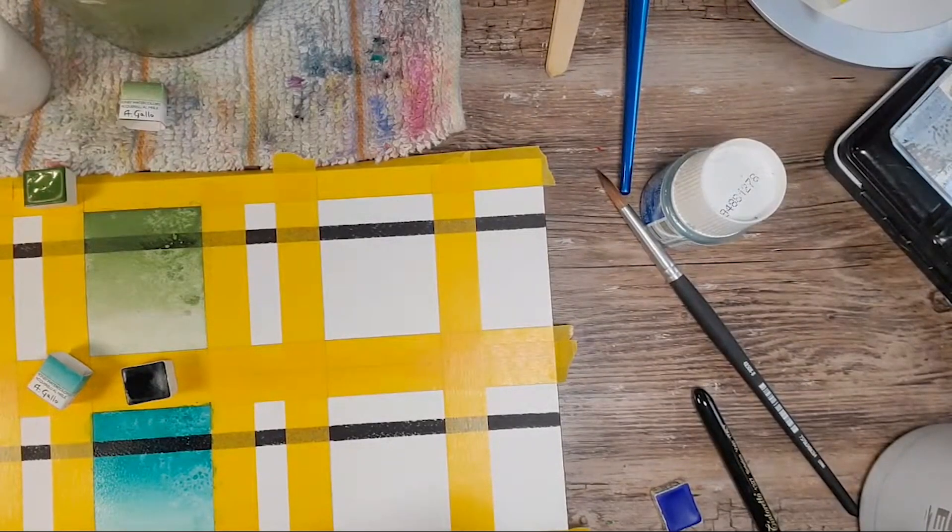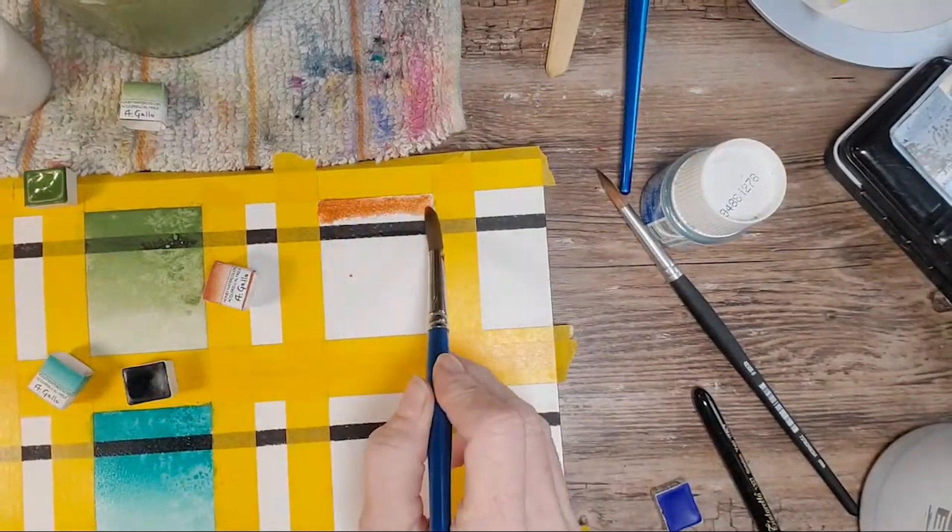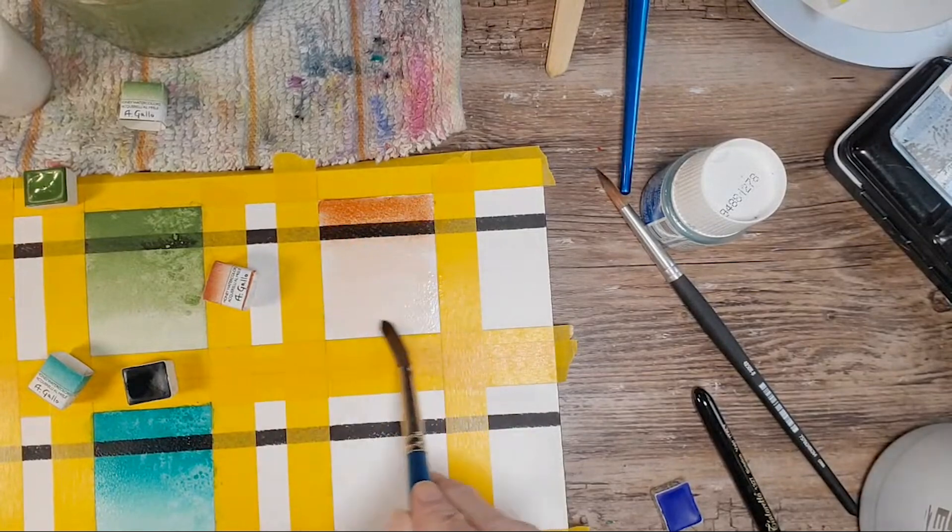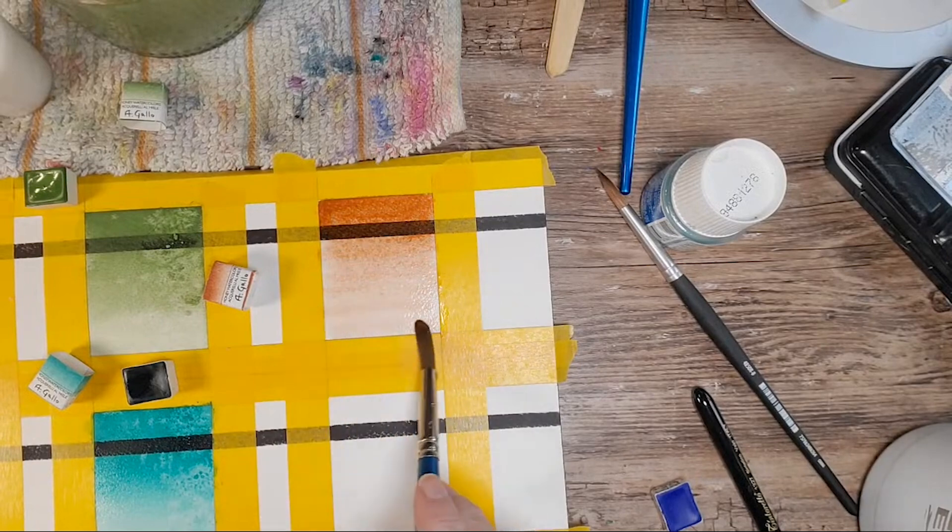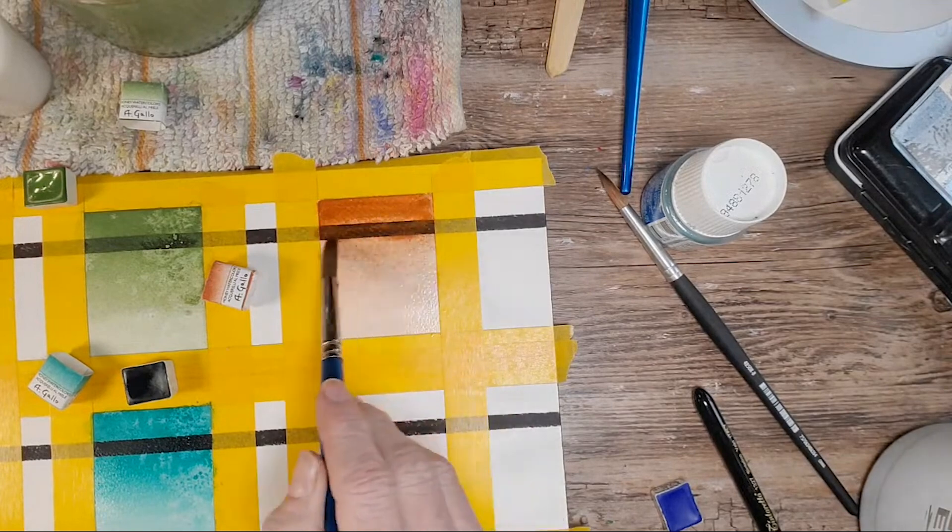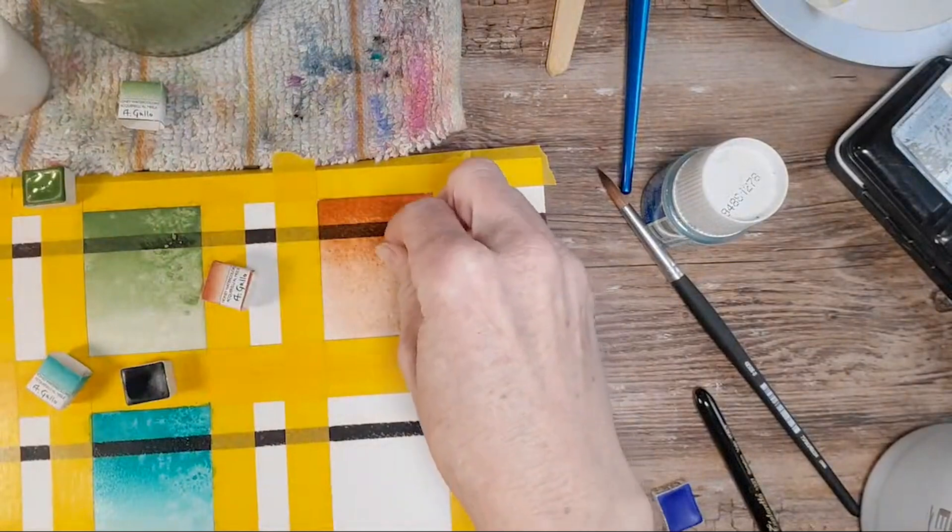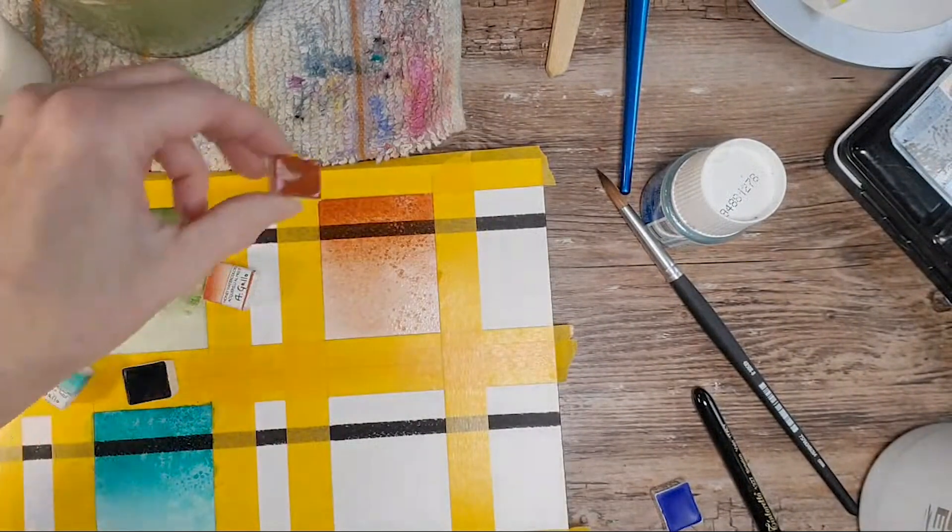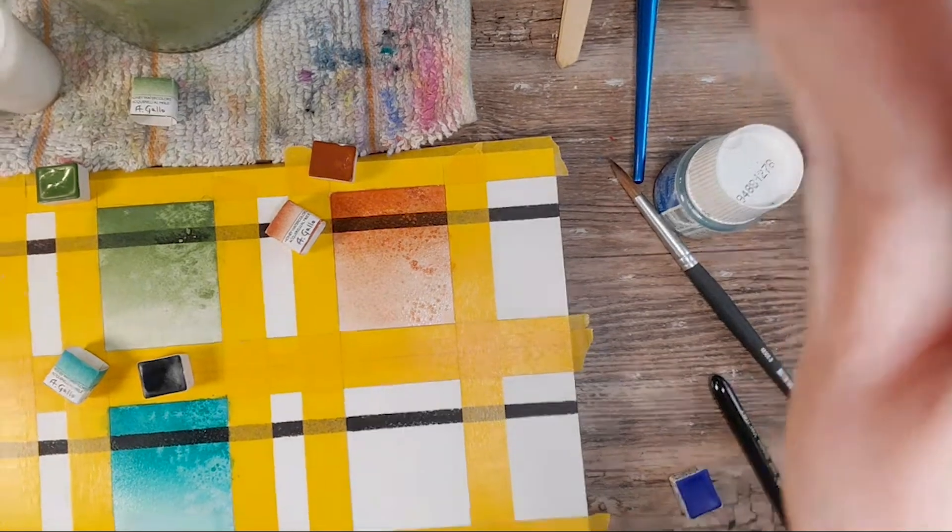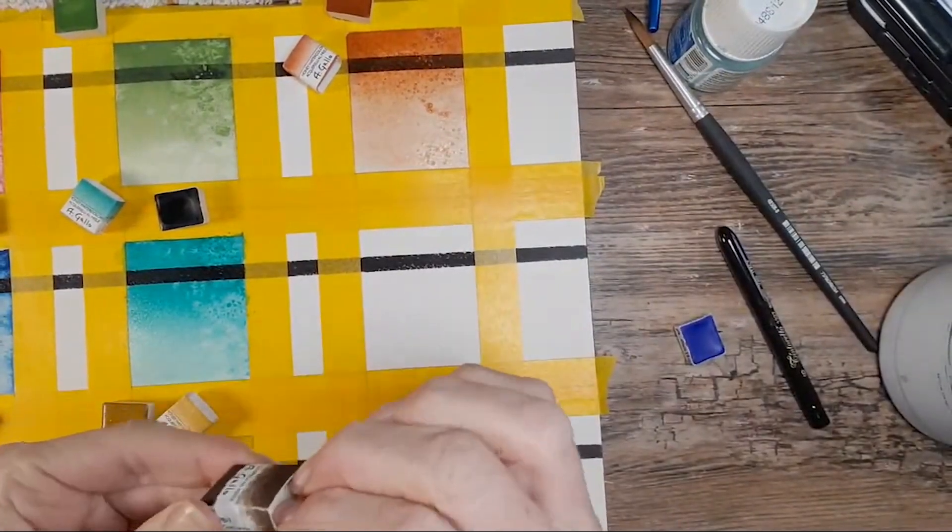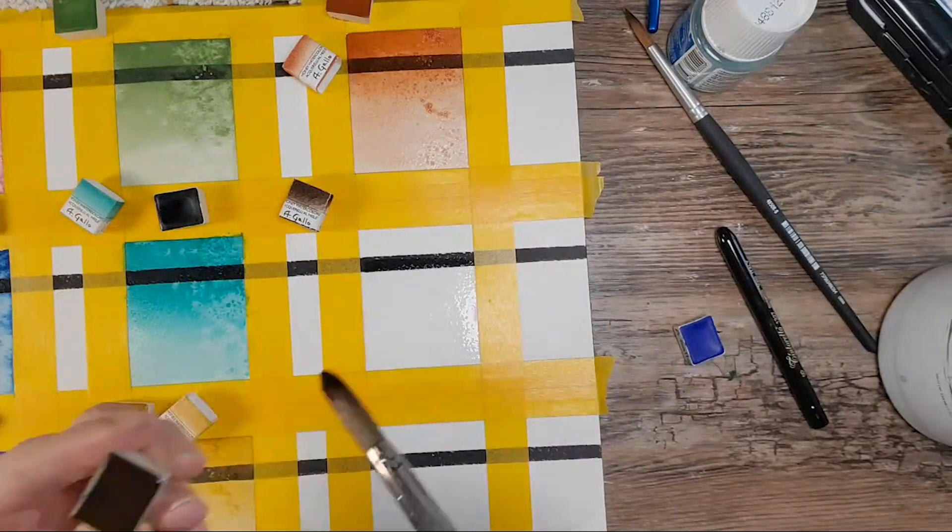So this is PBR 7, burnt sienna. That's a beautiful reddish burnt sienna. And I prefer my burnt siennas to be a little reddish, so I really like this one so far. We'll see what it looks like when it dries.